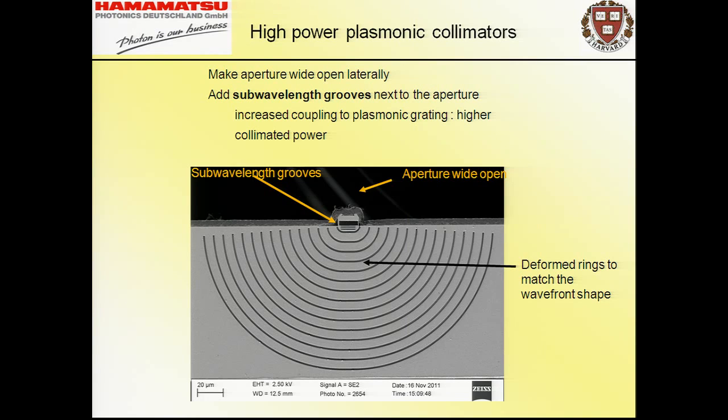We were interested in increasing output power and achieving watt-level highly collimated pulsed lasers, which could be potentially useful. Recent data with colleagues at Hamamatsu shows the idea is to widen the aperture for more throughput, while also increasing the scattering efficiency by the grooves. You want to bound your electromagnetic wave more to the surface to increase scattering efficiency. This is an impedance matching problem—you want to improve the impedance matching between the waveguide mode and the surface plasmon polariton.